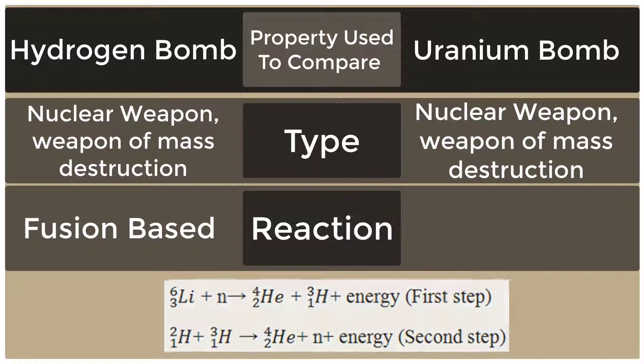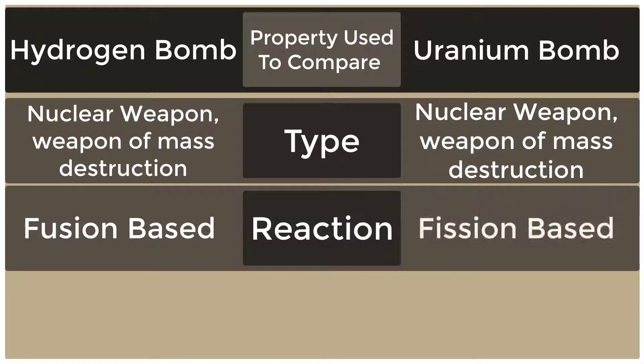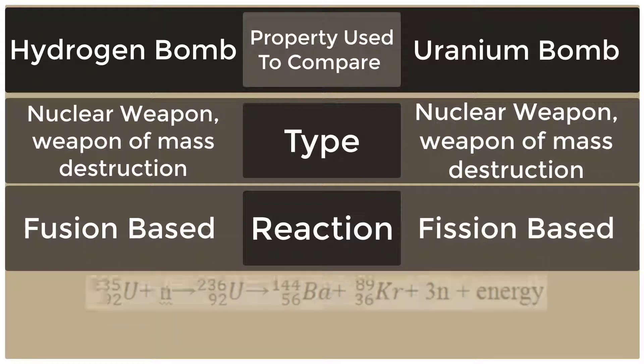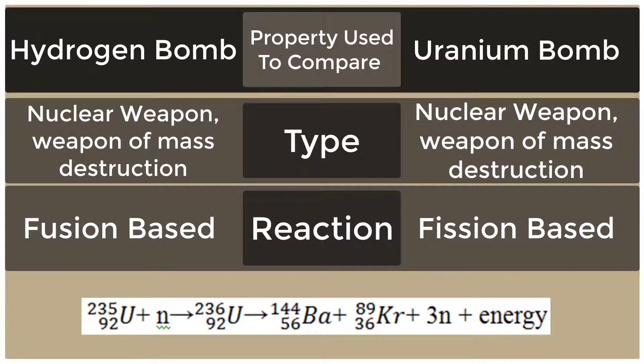Uranium Bomb is Fission Based. Uranium-235 plus Neutron reacts to form Barium-144 plus Krypton-89 plus 3 Neutrons plus Energy.